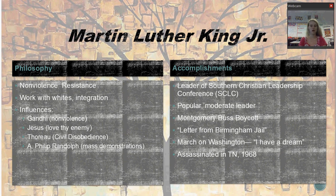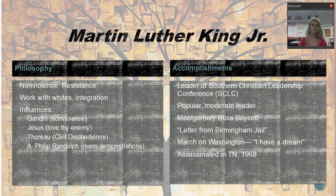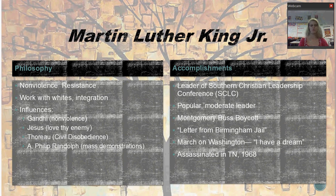Unfortunately, Dr. King was assassinated in Tennessee in 1968. He was actually supposed to be giving a speech at Wake Forest University at that time, but when the garbage workers in Tennessee went on strike, he decided to go there instead to support their strike. He was shot on the porch of his hotel. It was a huge hit for the civil rights movement and caused a lot of mass mourning throughout the country, with a major effect on the movement going forward.